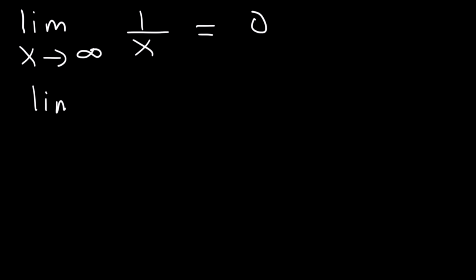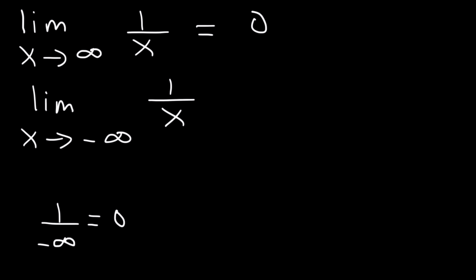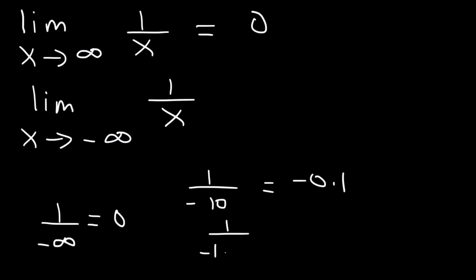Now, what about the limit as x approaches negative infinity of 1 over x? 1 divided by negative infinity will still be 0. If you divide 1 by negative 10, this would be negative 0.1. If you divide 1 by negative 100, you get negative 0.01.